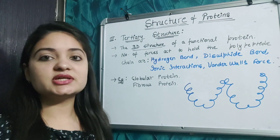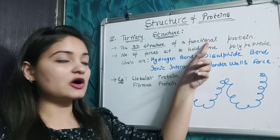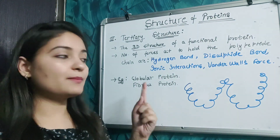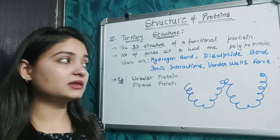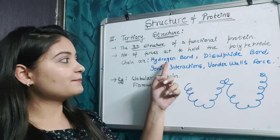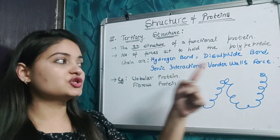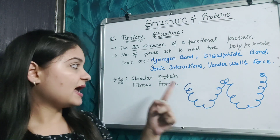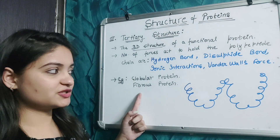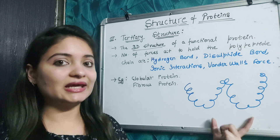The tertiary structure of protein is basically the 3D structure of the functional protein. There are a number of forces which hold the polypeptide bond between the carbon and nitrogen atoms, for example hydrogen bonds, disulfide bonds, ionic interactions, and Van der Waals forces. Examples of tertiary structures include globular protein and fibrous protein, representing a 3D structure of protein.